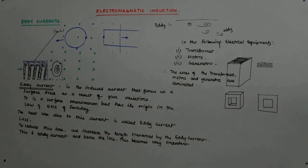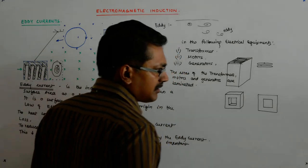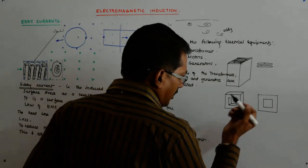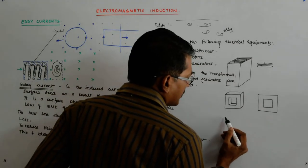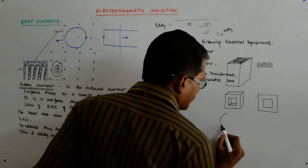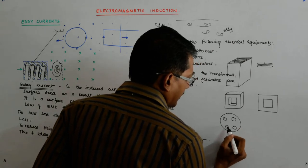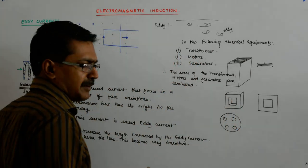They are thin laminations pasted one over the other, and even motor cores. So you will find that this is the rotor, these are the holes there, and these are laminar.